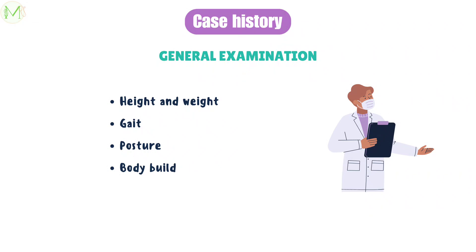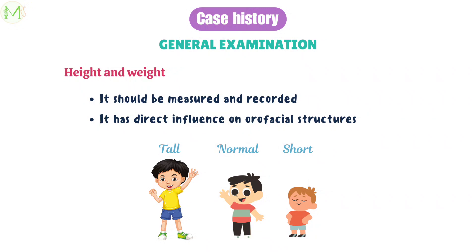We will start examining the patient with general examination. We need to record height and weight of the patient, gait, posture, and body build as part of general examination. The height and weight of the patient should be measured and recorded, as this provides a clue to the physical growth and maturation of the patient that may have dentofacial correlation. They are categorized as tall, normal, and short.